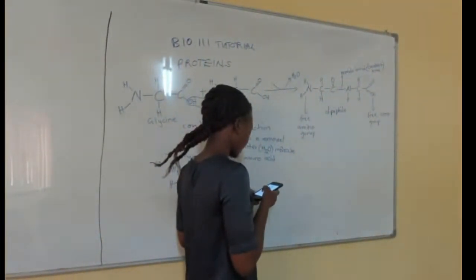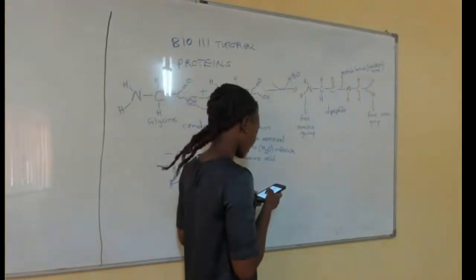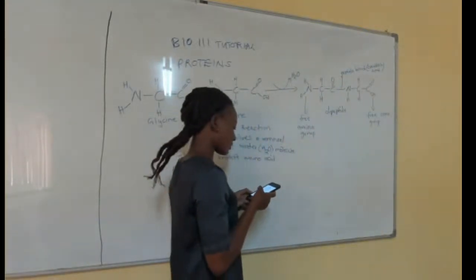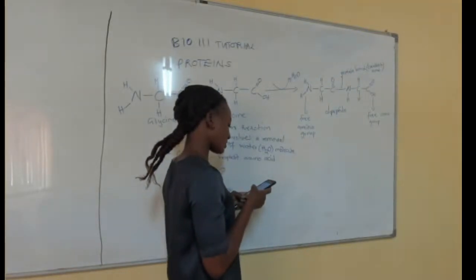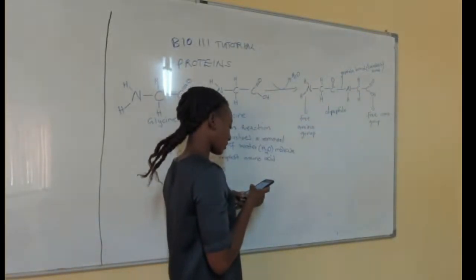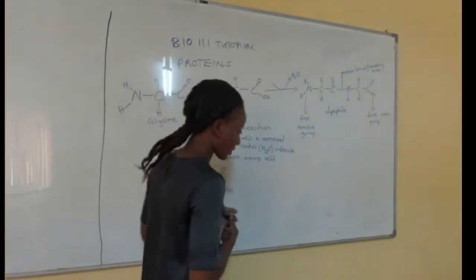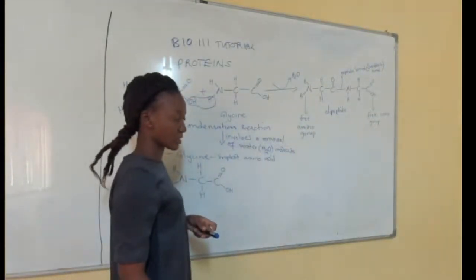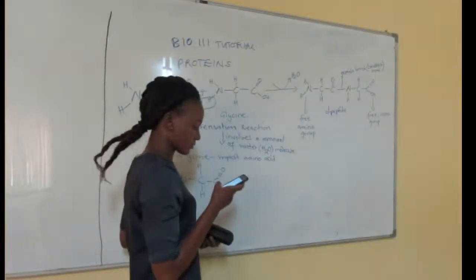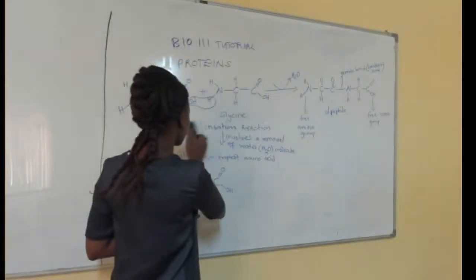The next question asks: with examples of amino acids, explain the types of isomerism that exist in amino acids. We expect to explain the types of isomerism found in amino acids using known amino acid examples.